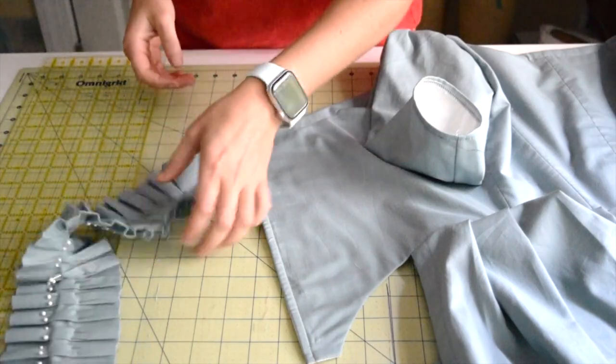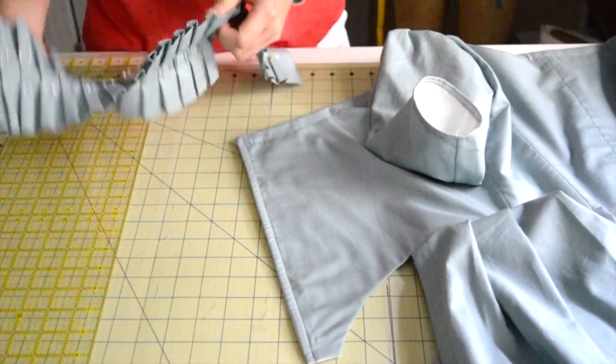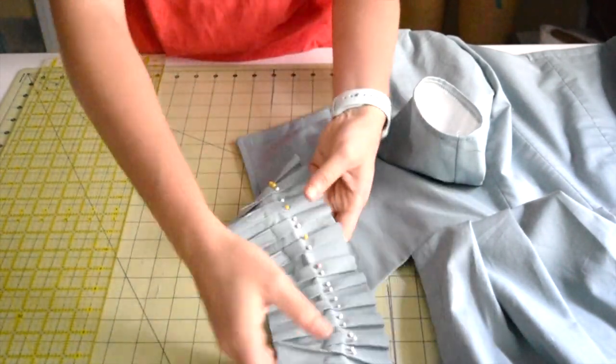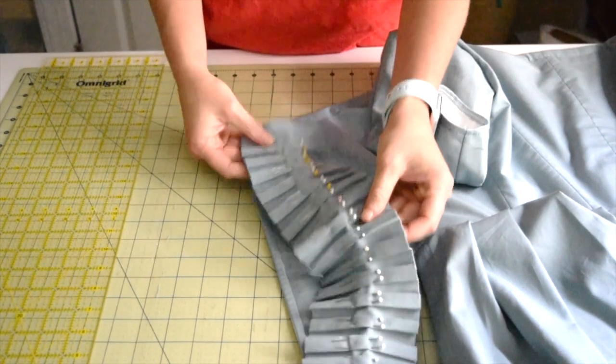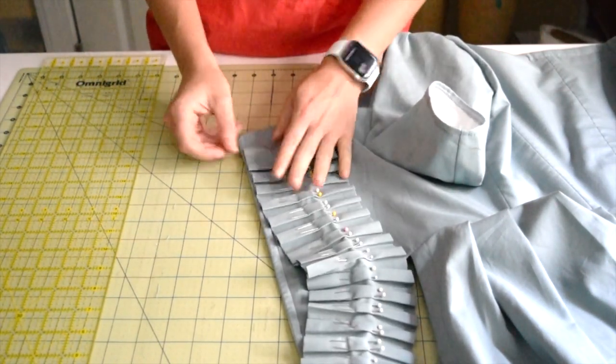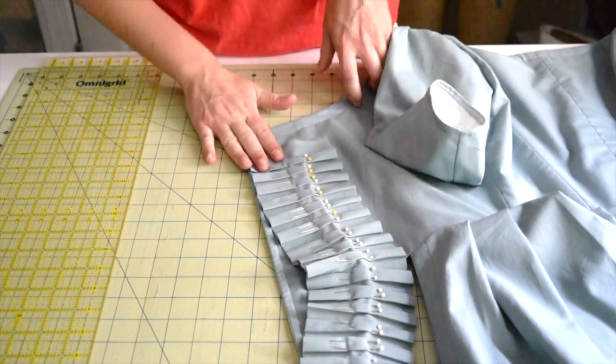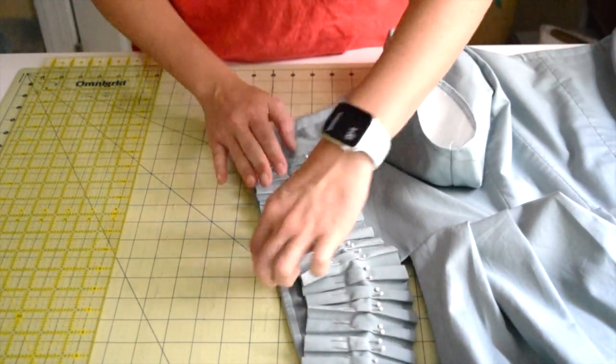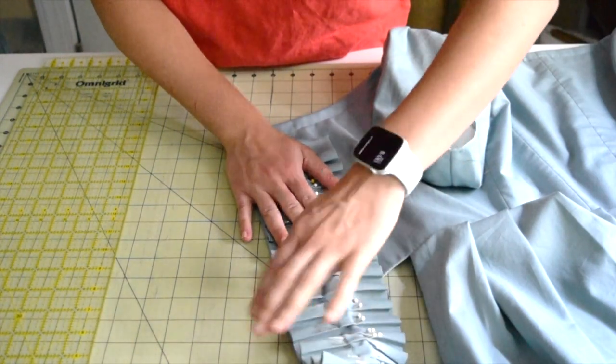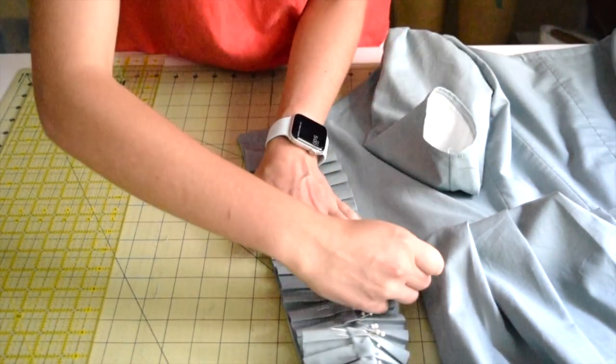The bodice is off the mannequin and I have all my trim pinned. I'm ready to just literally stick this on here and I don't have to go all the way to the top because there's going to be trim going down here. So I am going to match this up with the edge and pin down the sides.